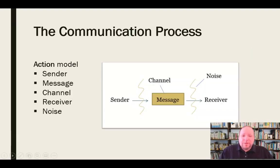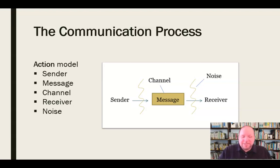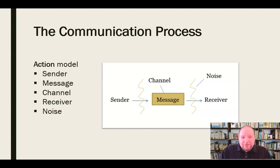So let's start with the basic model of communication. Years and years ago, academics came up with this model of communication. They said, what happens when we communicate? What specifically is going on when a person communicates? And they came up with what they call the action model, where they had these five elements that they said were in play during the communication process, starting with the sender.